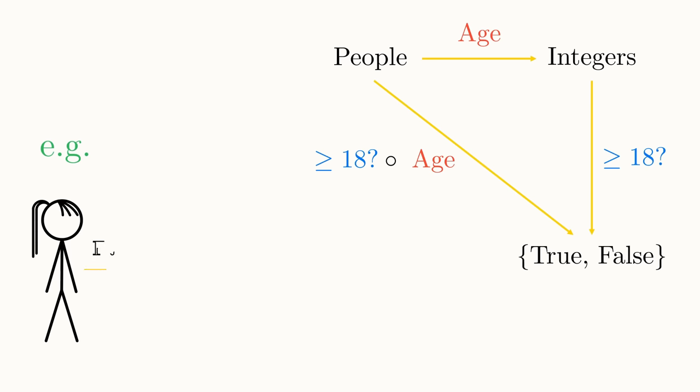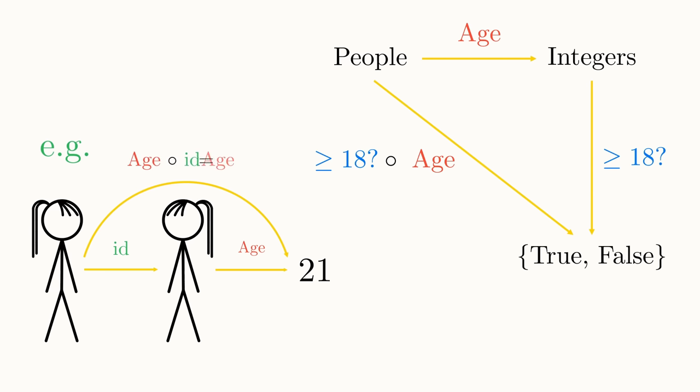Consider the function that maps each person onto themselves. We call this function the identity function, or ID. This seems to be utterly useless, but let's see what happens when we compose it with a more interesting function. The composition of our identity function and our age function is a function that maps Alice onto 21, her age. Notice, that's exactly the same mapping as our age function. In other words, composing age with the identity function gives the age function. Composing with the identity function is like multiplying by one. It simply does nothing.